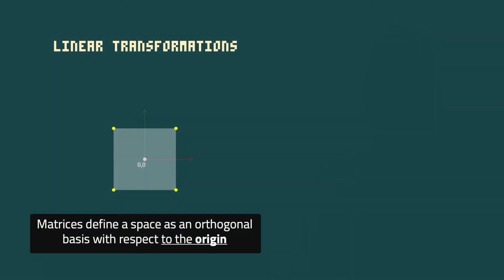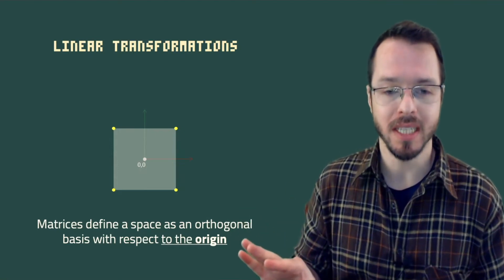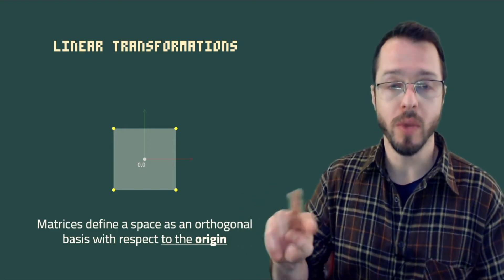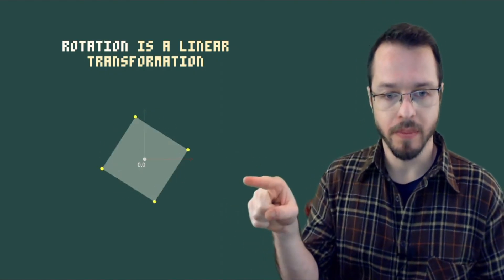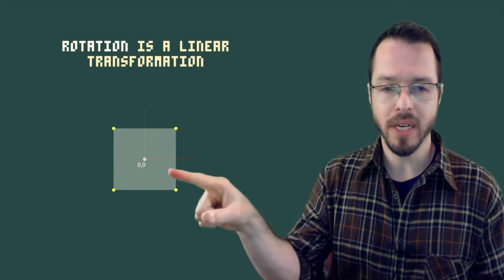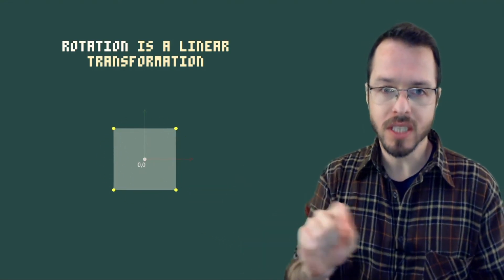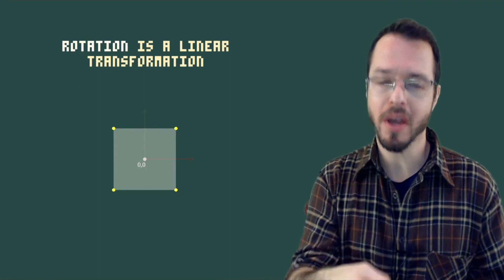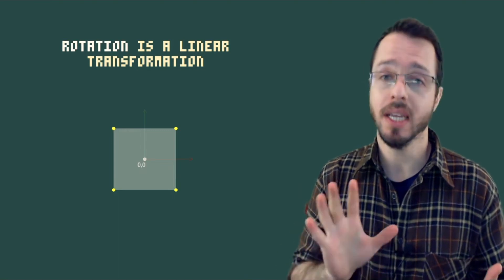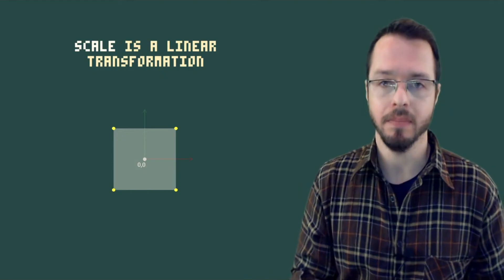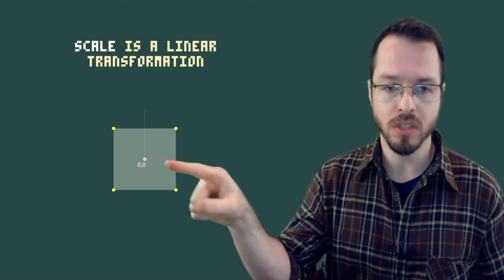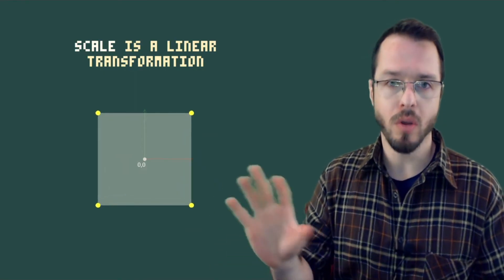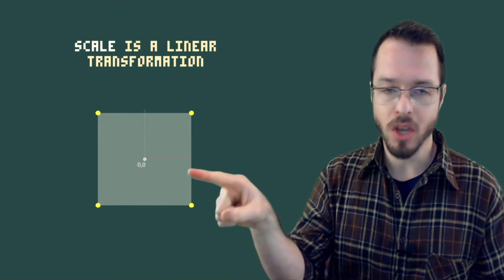Matrices define a space as an orthogonal basis with respect to the origin. Rotation is a pure linear transformation: when we rotate points, the origin doesn't change — zero times zero is always zero. Scaling is also a linear transformation: we start with lines, we end up with lines, and the center stays unchanged. We scale things up and down, but the origin is always there.